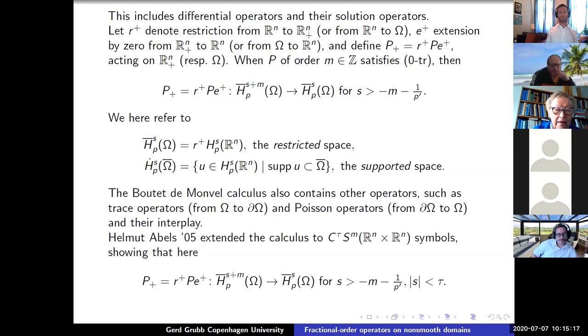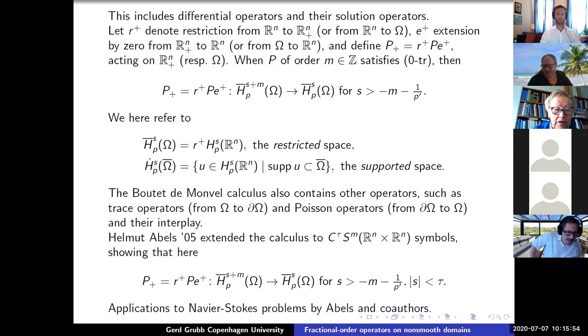Okay, so this was a good old Boutet de Monvel theory. Now the question is, can we do that with non-smooth symbols? I mean, remember that ω is smooth. There is an extension worked out by Helmut Abels that extends the calculus to the C^τS^m symbols, the Hölder-smooth symbols. And he showed that then here the truncated operator does what you would expect it to do, except that you have to take s between τ and minus τ. This is a very nice result. And there are many other results on how the whole calculus works. And he did this in order to treat questions for the Navier-Stokes problem.